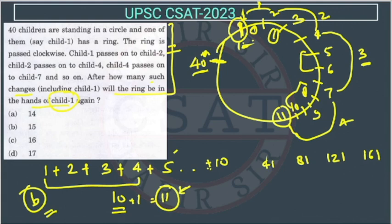First child, in the next round, this first child will be treated as 41st child. After first round. And after second round, this will be treated as 81. And after third round, this will be treated as 121.